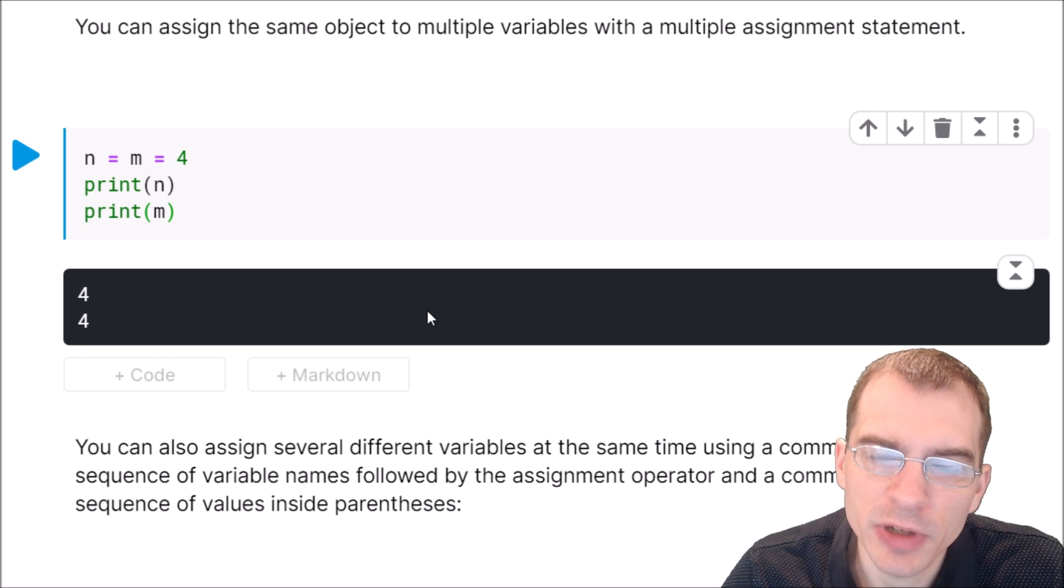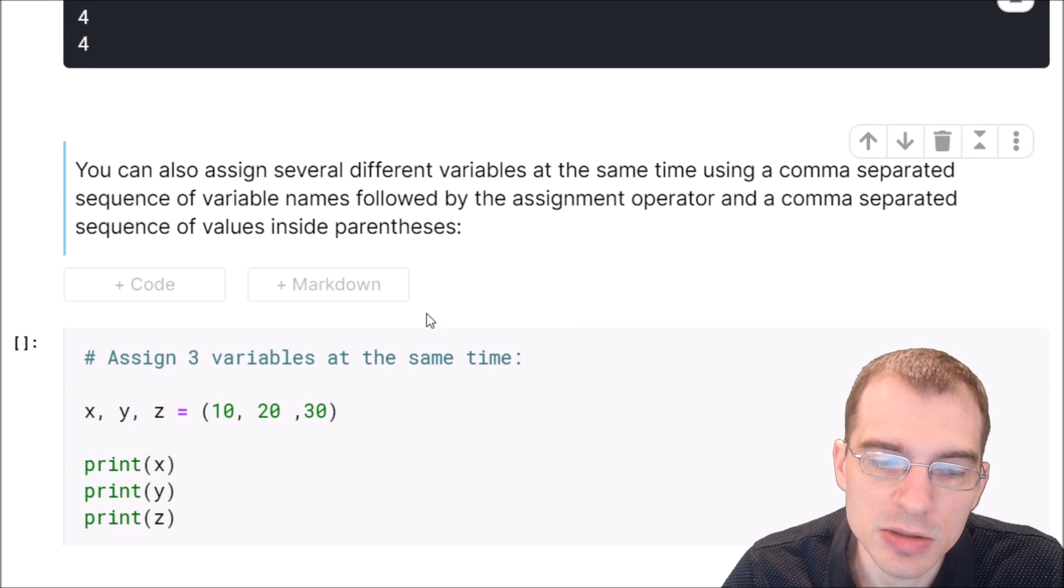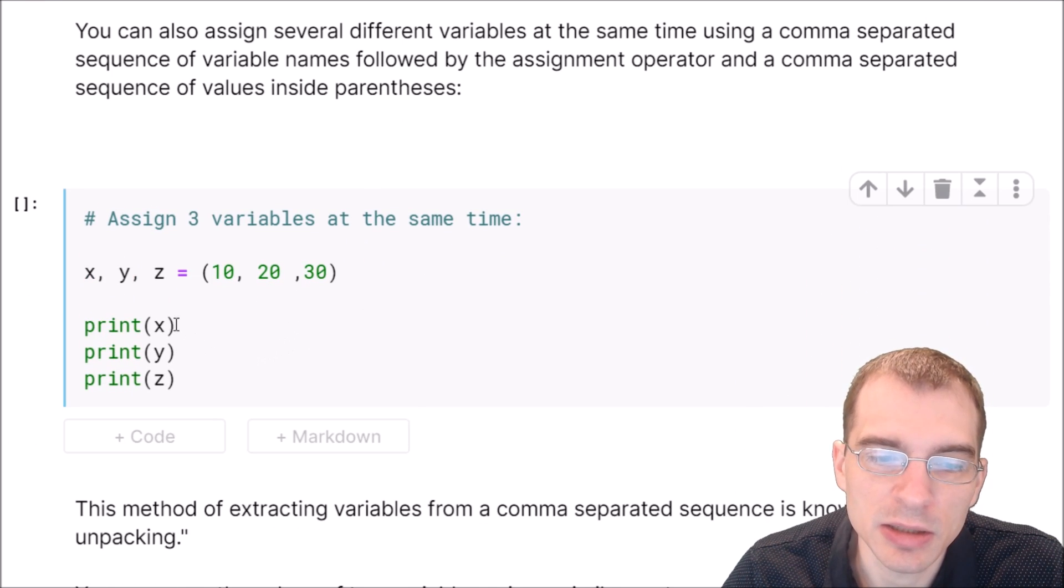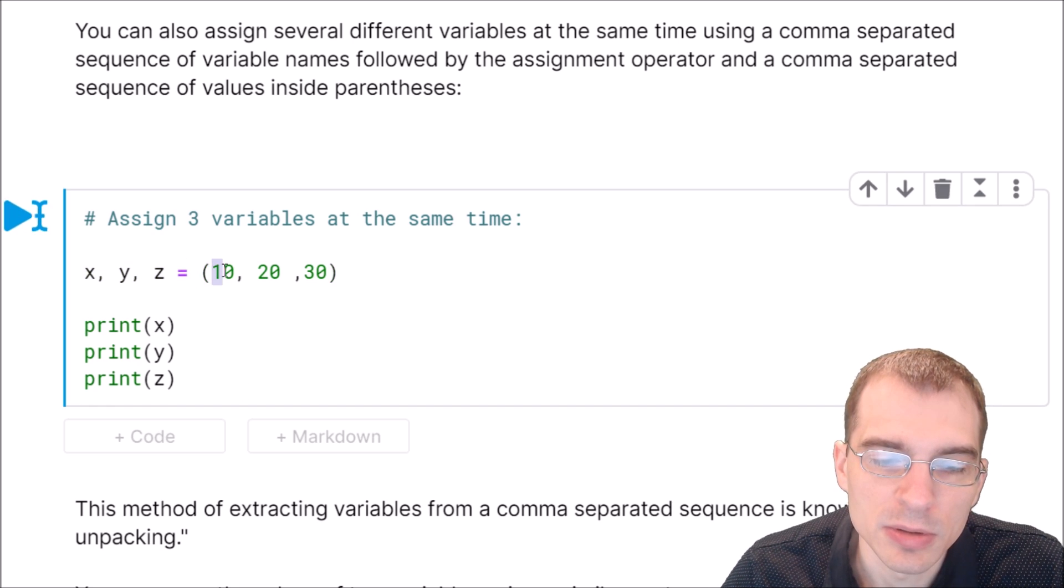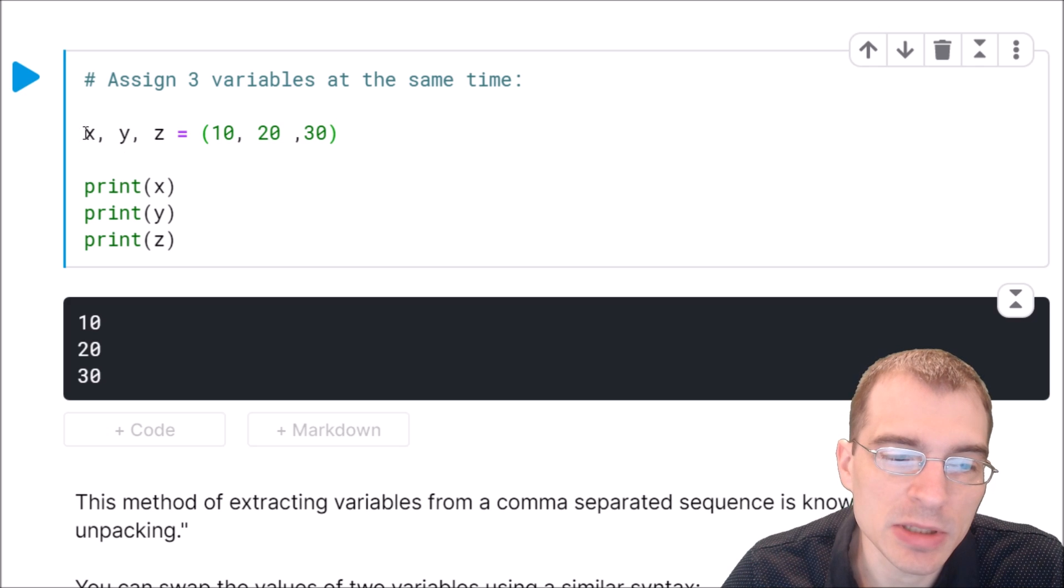You can also assign multiple variables at the same time using a comma separated list of values within parentheses. So here we're assigning three variables x, y, and z separated with commas, and we're saying equals 10, 20, and 30. What this is doing is extracting each value from within the parentheses here and assigning it to the variable in the proper order that came before the equal signs.